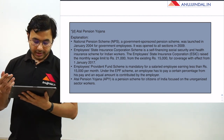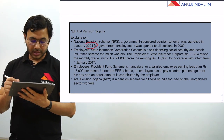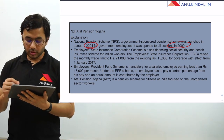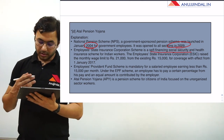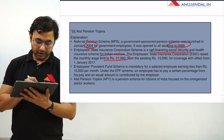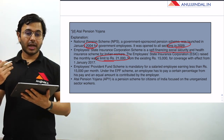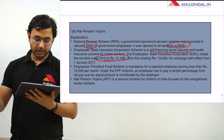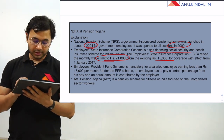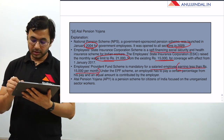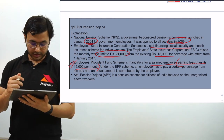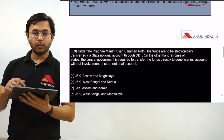A little bit about NPS, ESIC and EPF: NPS is a government-sponsored pension scheme launched in 2004 and opened for everybody in 2009. Employee State Insurance Corporation Scheme is a self-financing social security scheme; ESIC has recently raised the monthly wage limit to ₹21,000 — so if your monthly wage is below ₹21,000 you can get enrolled in ESIC (₹15,000 was the older limit). Employees' Provident Fund Scheme is mandatory for a salaried employee earning less than ₹15,000 per month. Atal Pension Yojana, as I said, is for unorganized sector workers only.